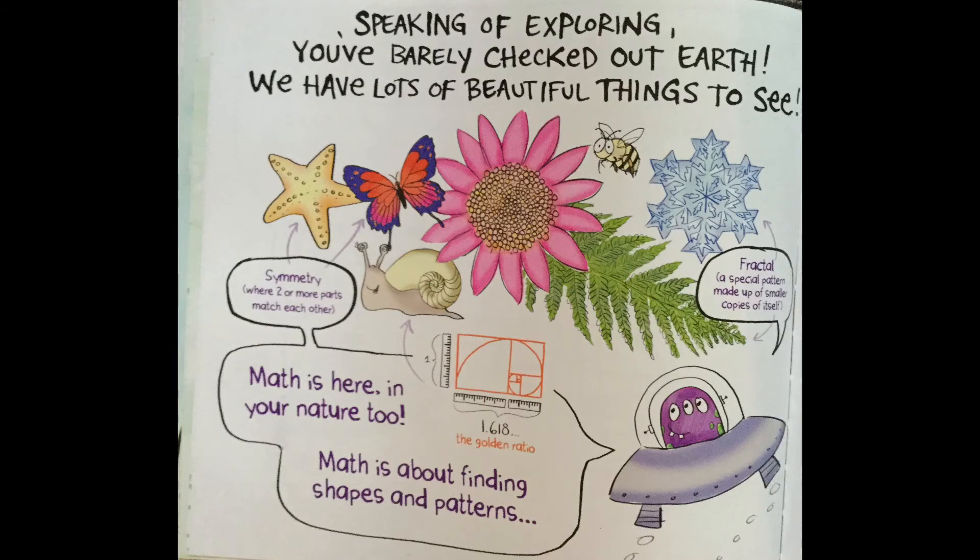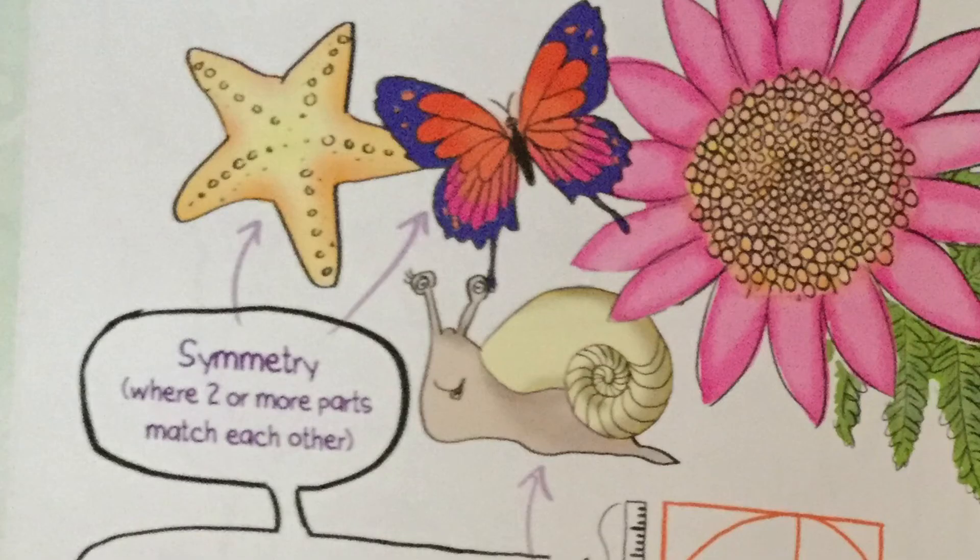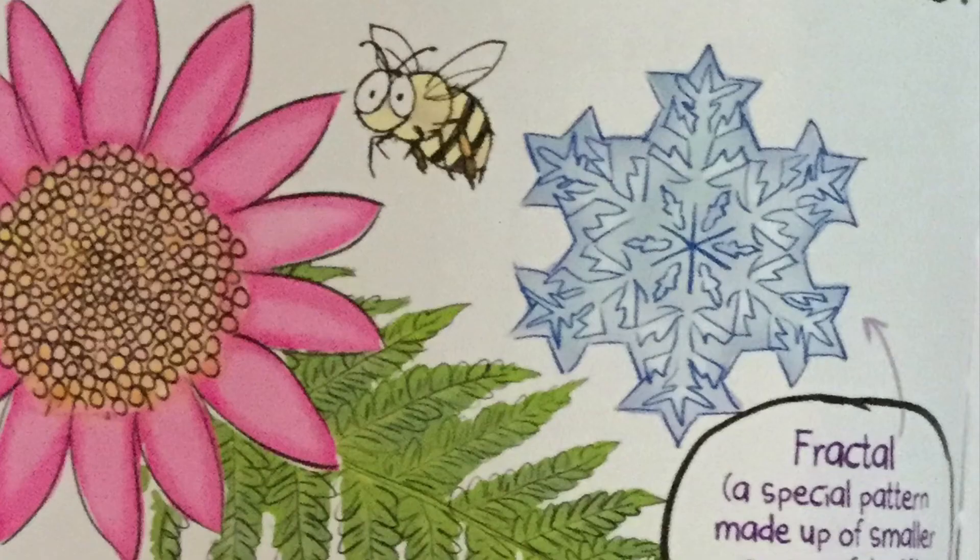Speaking of exploring, you've barely checked out Earth. We have lots of beautiful things to see. Math is here in your nature, too. Math is about finding shapes and patterns. See, symmetry is where two or more parts match each other, like the sea star, butterfly, or snail. A fractal is a special pattern made up of smaller copies of itself, like the snowflake.